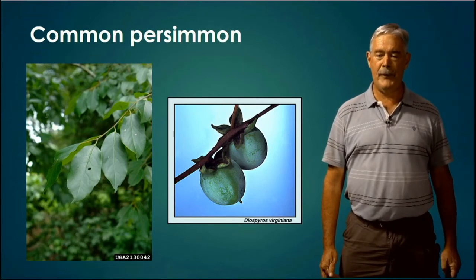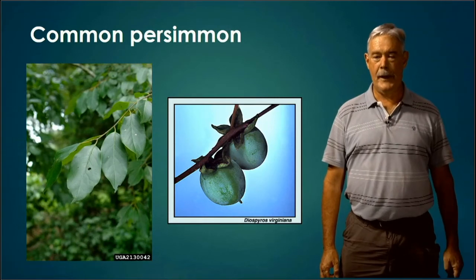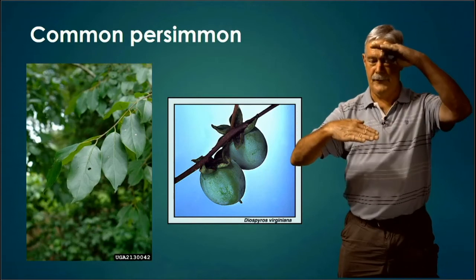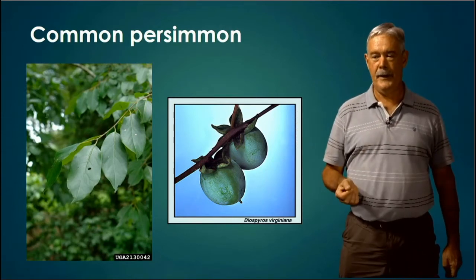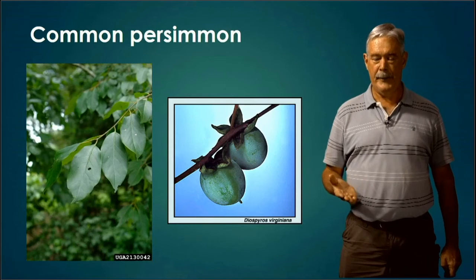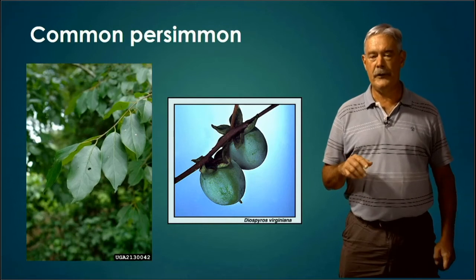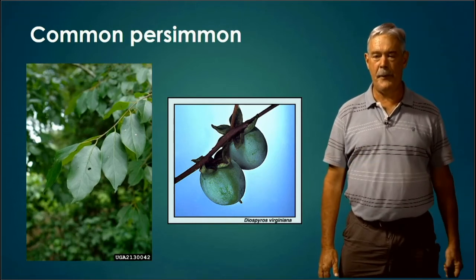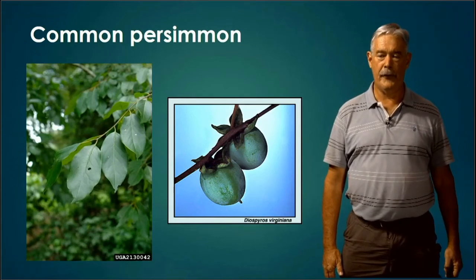The common persimmon leaf, if you're just looking at leaves, is a simple leaf that alternates off the stem. If you look at the underside of a common persimmon leaf, it looks like broken windowpane. The veins look like thousands of little squares on the bottom side. That's the way I really know we're looking at a persimmon tree.